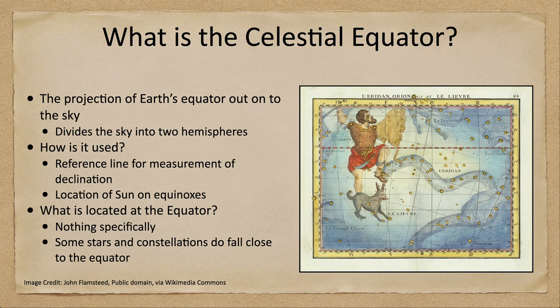There's nothing specifically located at the celestial equator, although there are stars and constellations which go through it. On a star chart, we can actually see the celestial equator marked, and it goes directly through the middle of the constellation Orion. So some constellations will be split — Orion is part in the northern hemisphere and part in the southern — but there is nothing specific that will always identify the celestial equator in the sky.